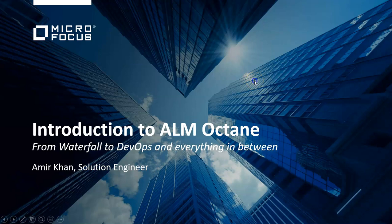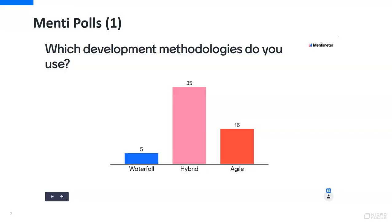Let's get started and look first at several surveys we did recently at one of our major events, Microfocus Universe. We asked around 50 users what development methodologies they are using, and this was the result. We saw that a couple of people voted for waterfall, others voted for hybrid, and some went for agile. We can see here a clear movement towards agile.